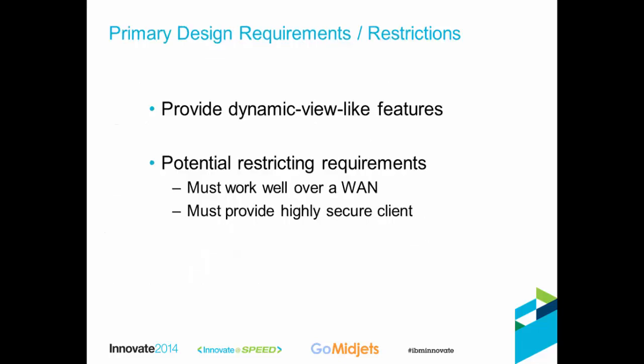Looking at the overarching requirements for automatic views, the top requirement is that we provide dynamic view-like features. But there are other requirements that are higher priority and potentially restricting. Automatic views must function effectively over a wide area network connection, tolerating high latency between client and server — if a feature can't function over a high-latency network connection, it won't be part of automatic views. In addition, security is an overriding requirement: if a feature would compromise or reduce the security of the client environment, it would not be included.